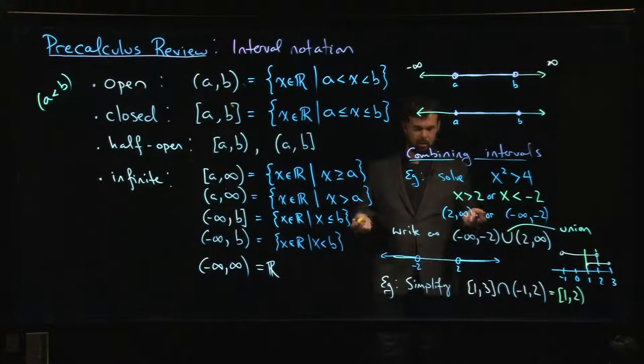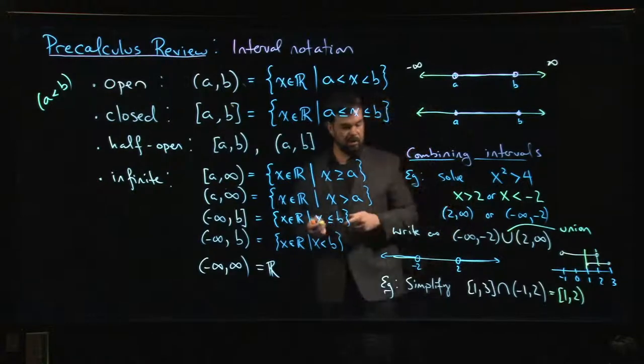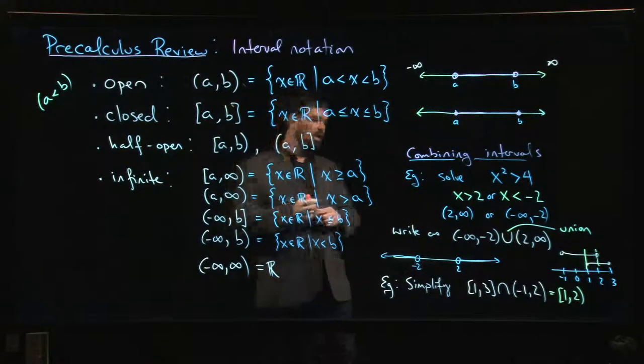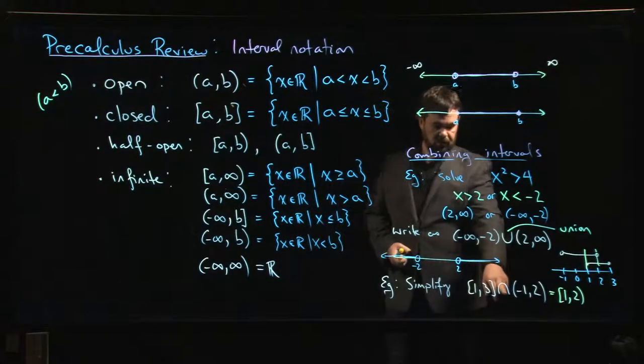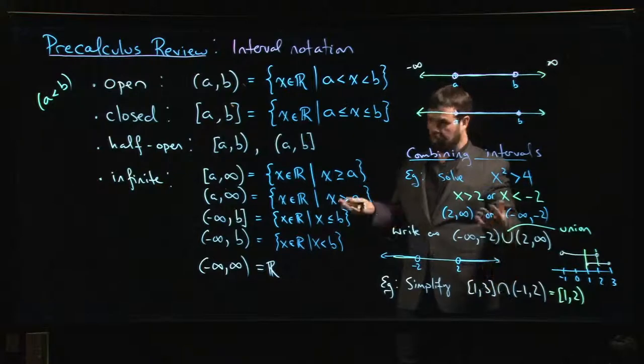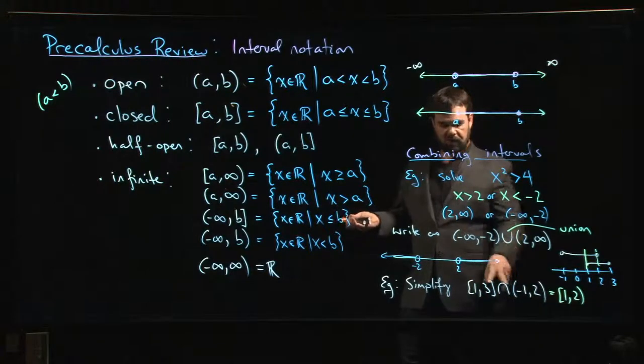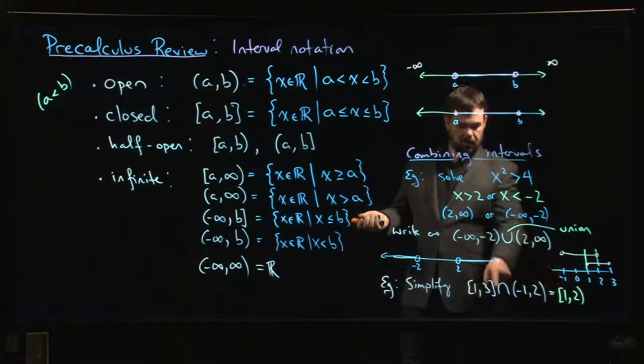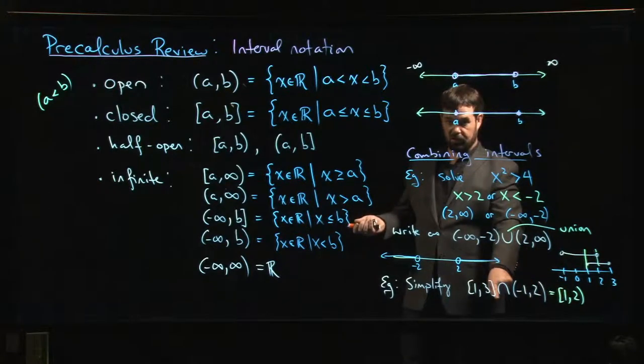You'll notice that when you intersect two intervals you get another interval. It might be an interval of a different type, but it's still an interval. So you usually don't see intersection notation used very often in calculus textbooks, because if you intersect two intervals you get another interval, and most people are going to choose to just write this rather than the more complicated expression you see on the left.